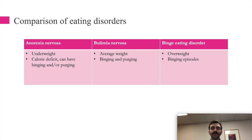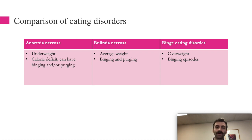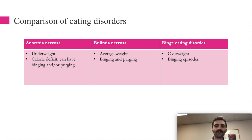To summarize the comparison of the three eating disorders: anorexia nervosa — underweight, low BMI, calorie deficit, can have binging or purging. Bulimia nervosa — average weight, requires both binging and purging. Binge eating disorder — overweight, can only have binging with no purging component. This framework should help organize your understanding of these three disorders.